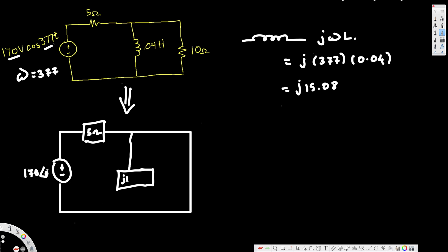The impedance j15.08 is placed here, and this resistance remains 10 ohms. When we have impedance in phasor domain, we treat impedance the same as a resistor. So when we have them in series we can add them together, and when we have impedances in parallel we can use the product-over-sum method to find the equivalent impedance.